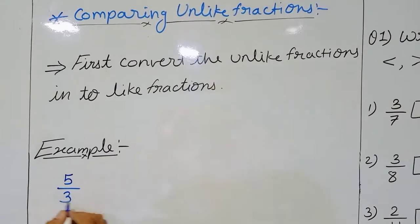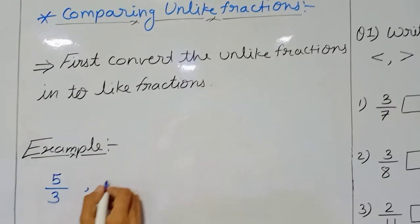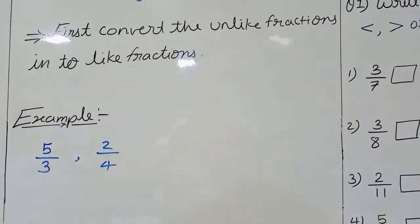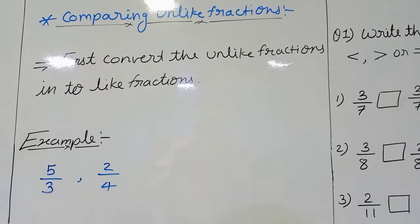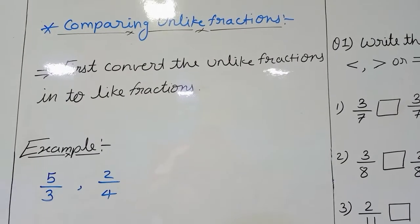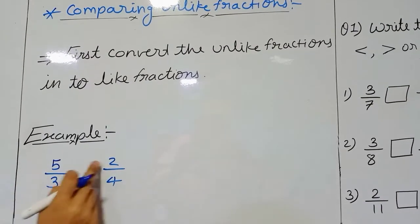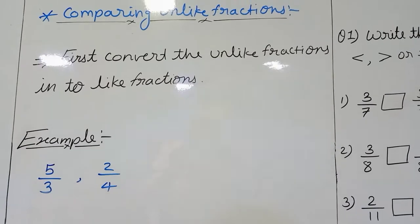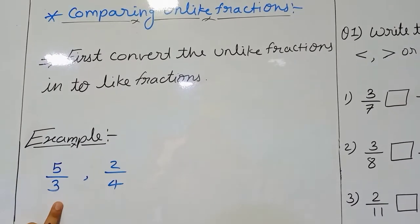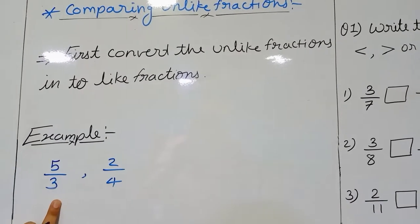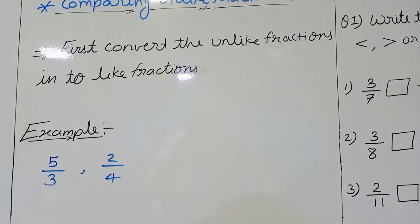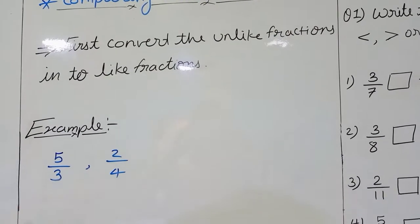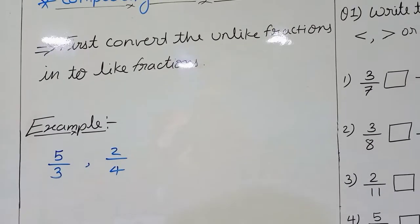For example, here we have 5 upon 3 and 2 upon 4. These two fractions are unlike fractions — the numerators are different and the denominators are also different. There is only one way to do the comparison between these two fractions: we have to convert these fractions into like fractions.